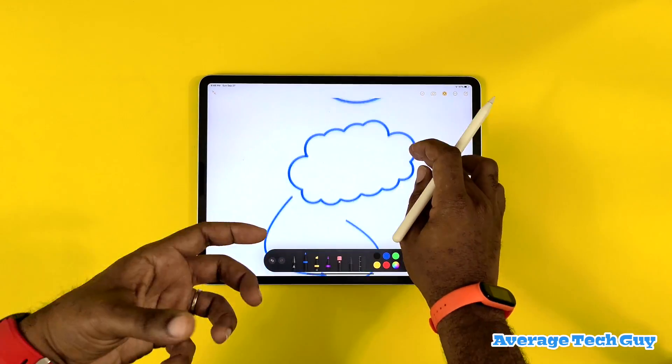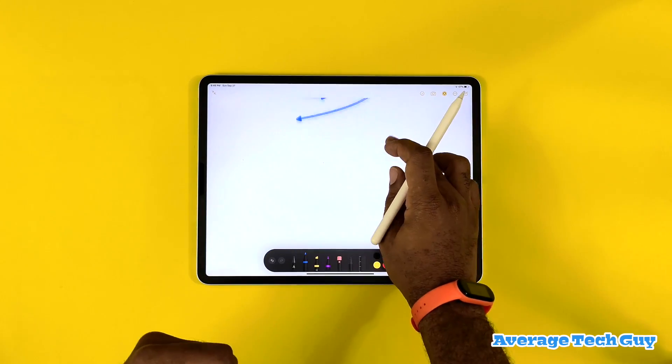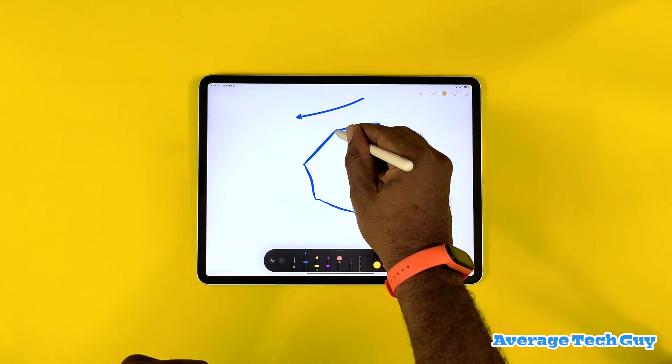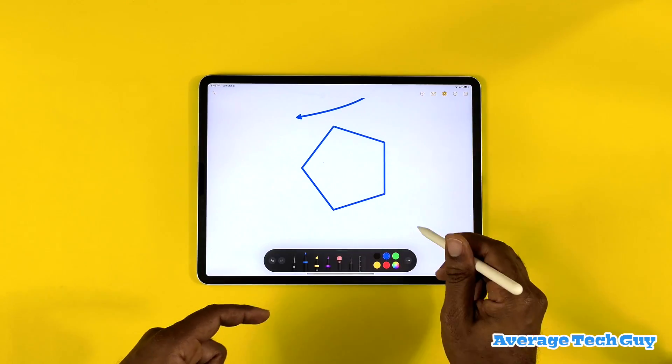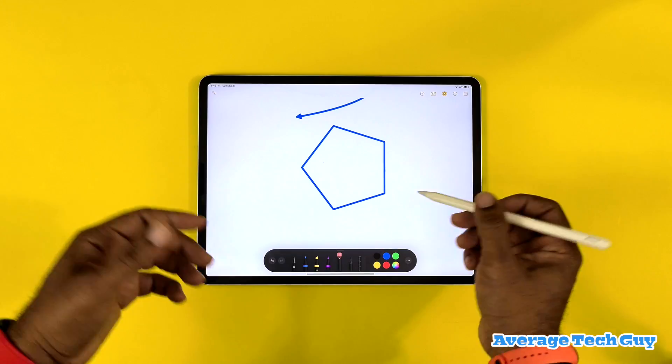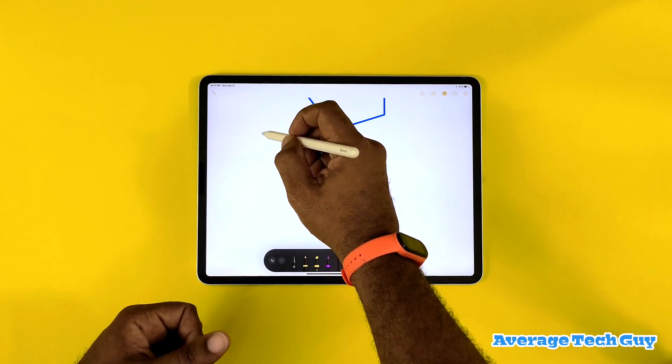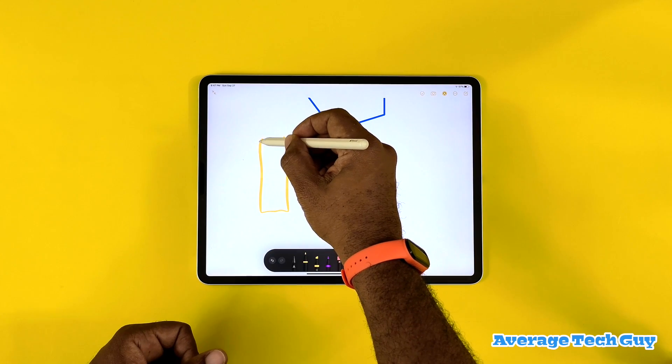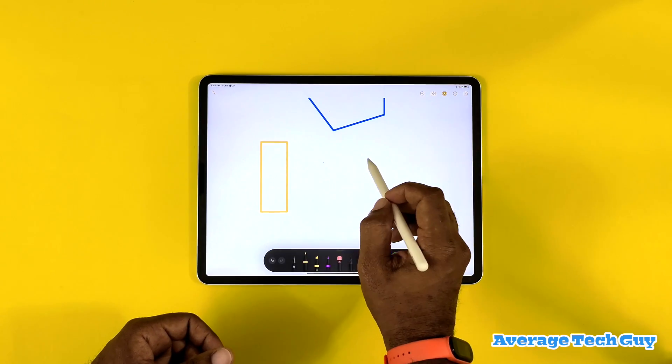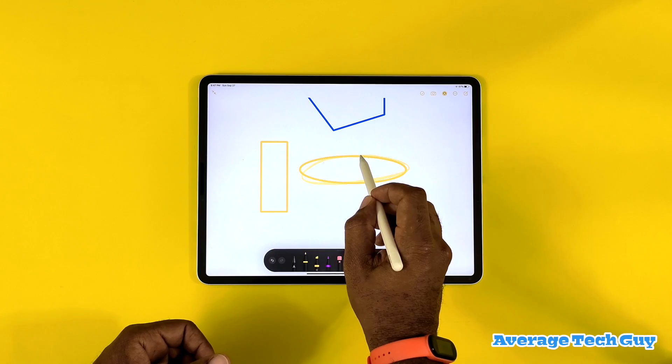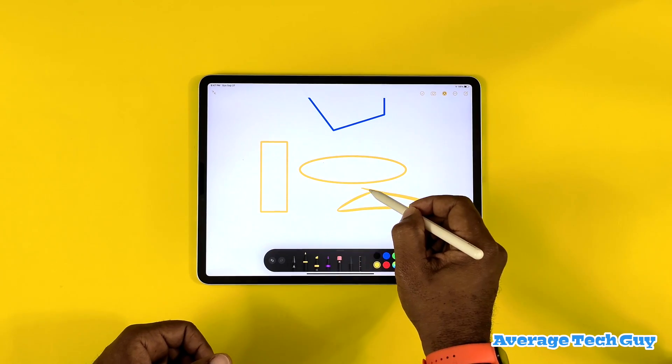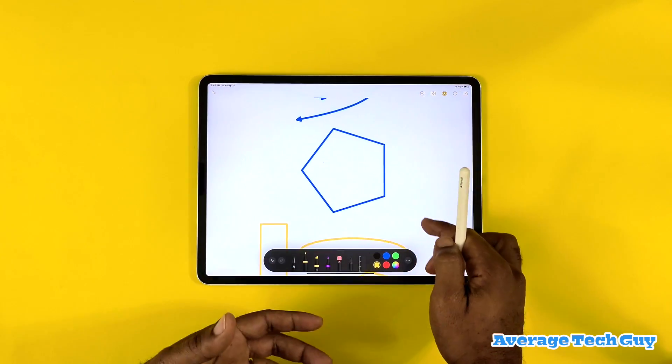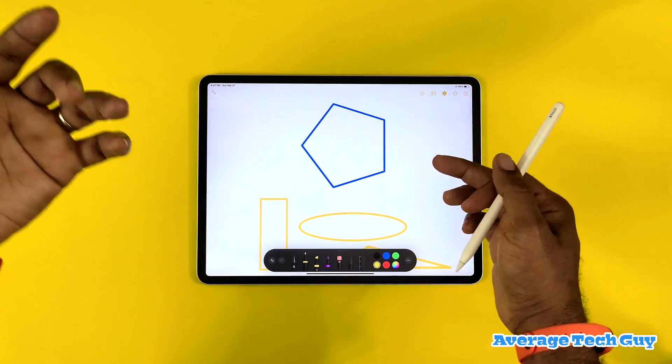There we go, we got a pentagon. Moving on to other shapes, this is a rectangle, and then we got the oval. There we go, so different types of triangles, you got pentagons, you got ovals.